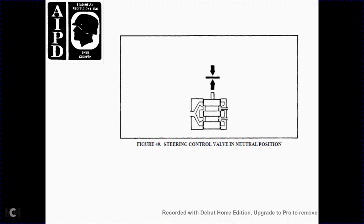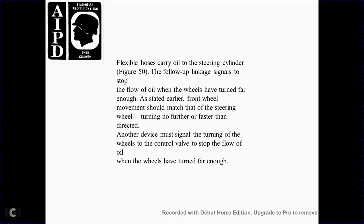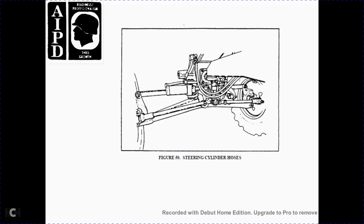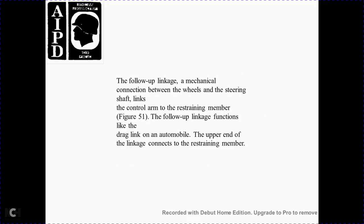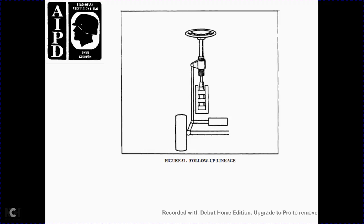Figure 49 shows the steering control valve in the neutral position. Flexible hoses carry oil to the steering cylinder. The follow-up linkage shown in Figure 50 signals when to stop the flow of oil. As the wheels turn far enough, the front wheels must match the steering wheel input - turning no further and no faster than directed. Another device must signal the turning of the wheel to stop the flow when the wheels have turned far enough. The follow-up linkage, shown in Figure 51, is the mechanical connection between the wheels and the steering shaft, running from the control arm length to the restraining member. The upper end of the linkage connects to the restraining member. Figure 51 shows the follow-up linkage.